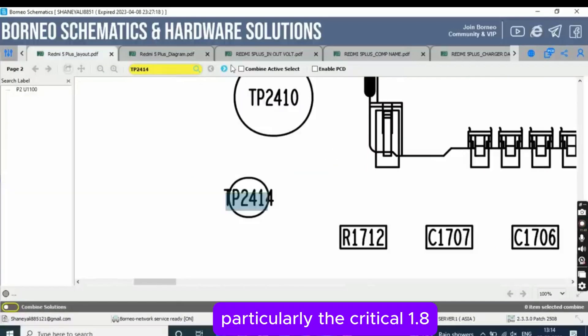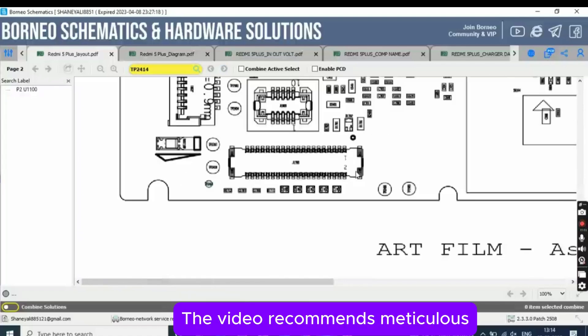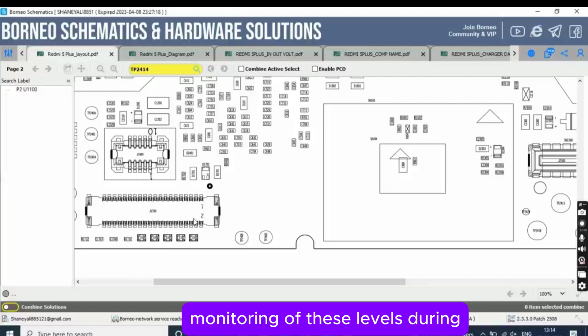Voltage levels, particularly the critical 1.8 volts, are identified as key indicators for assessing the functionality of the CPU and its power supply. The video recommends meticulous monitoring of these levels during troubleshooting.